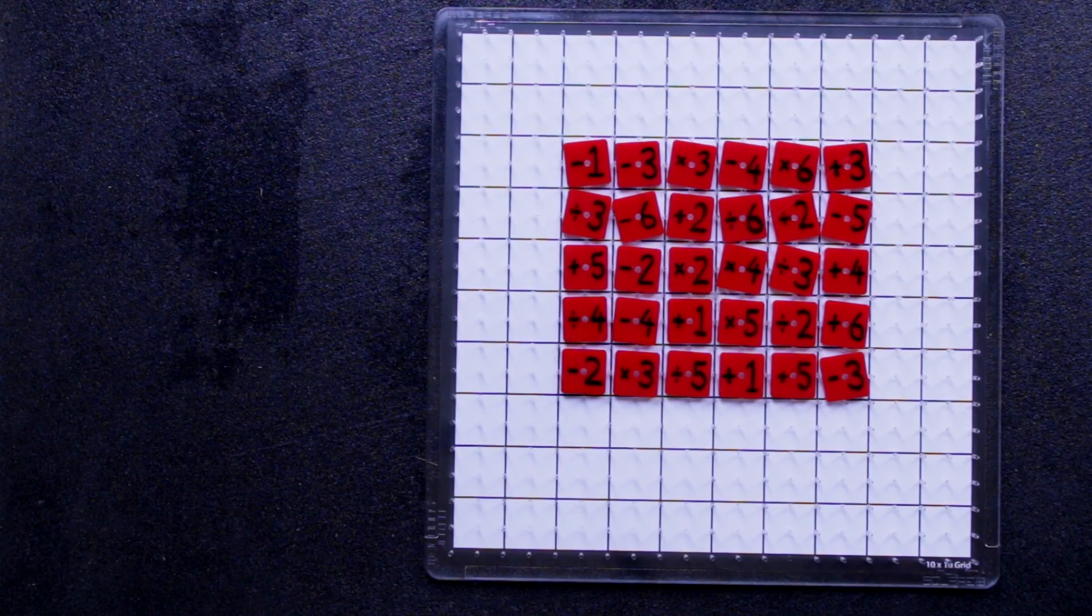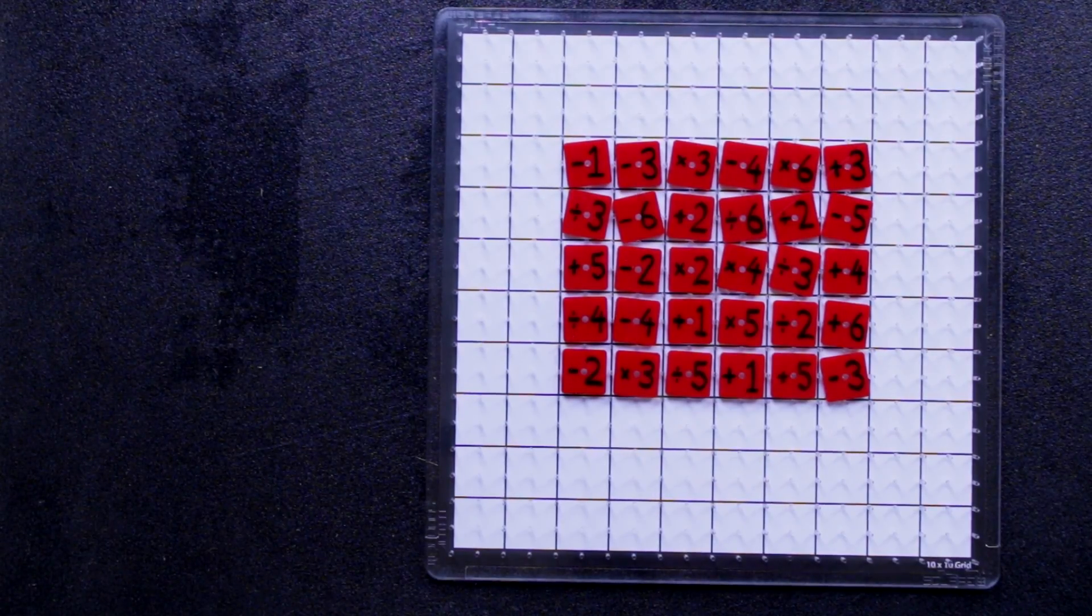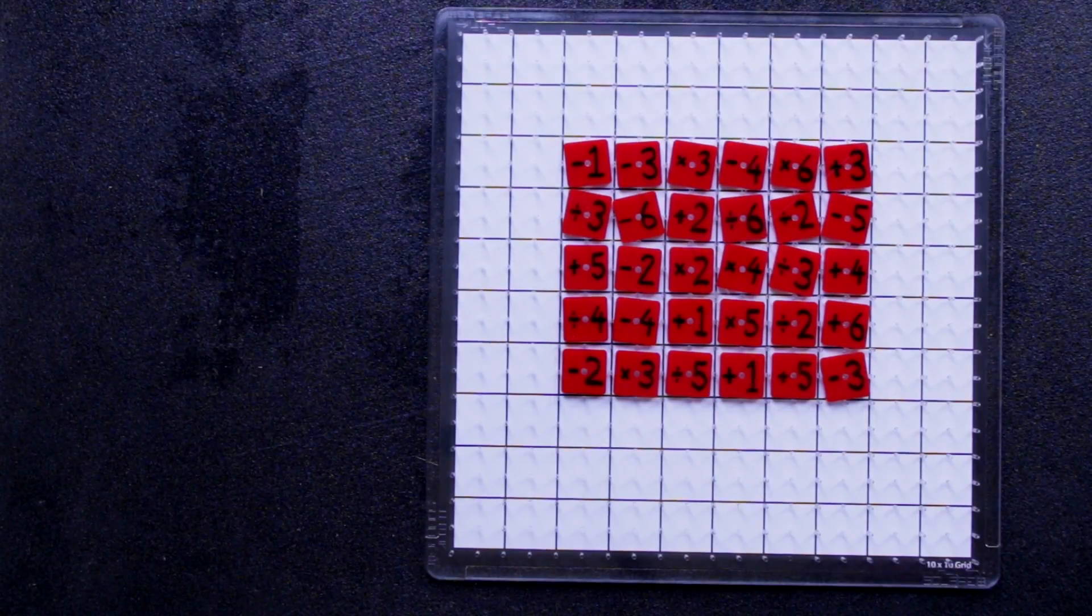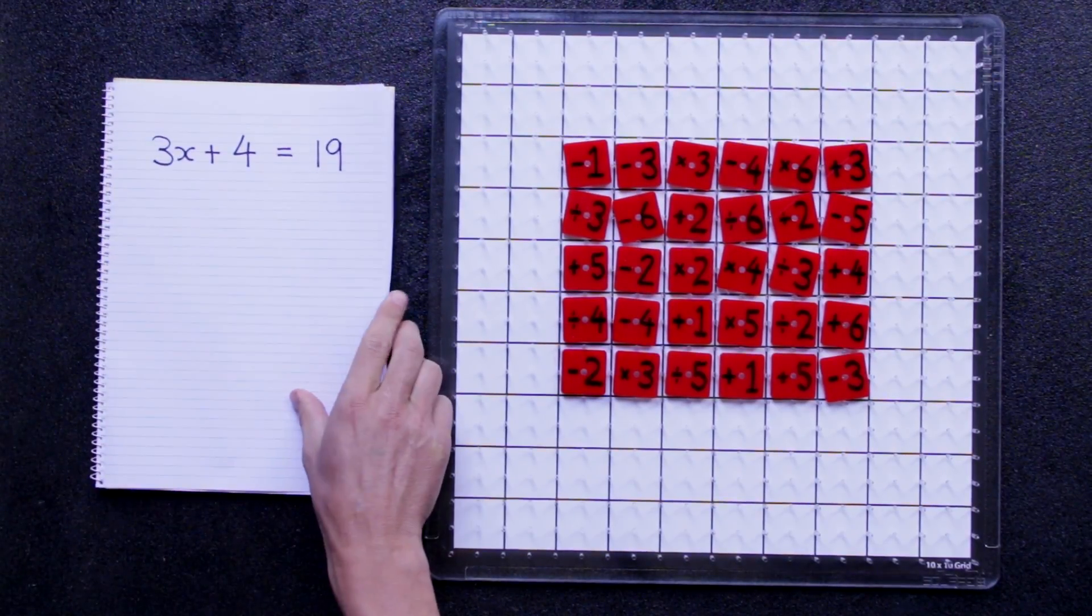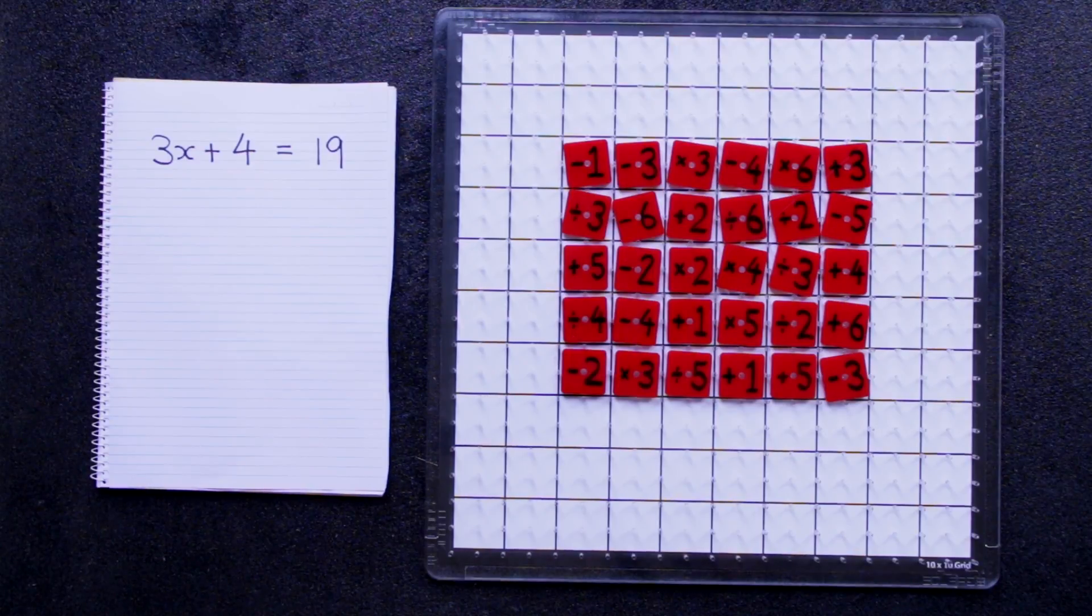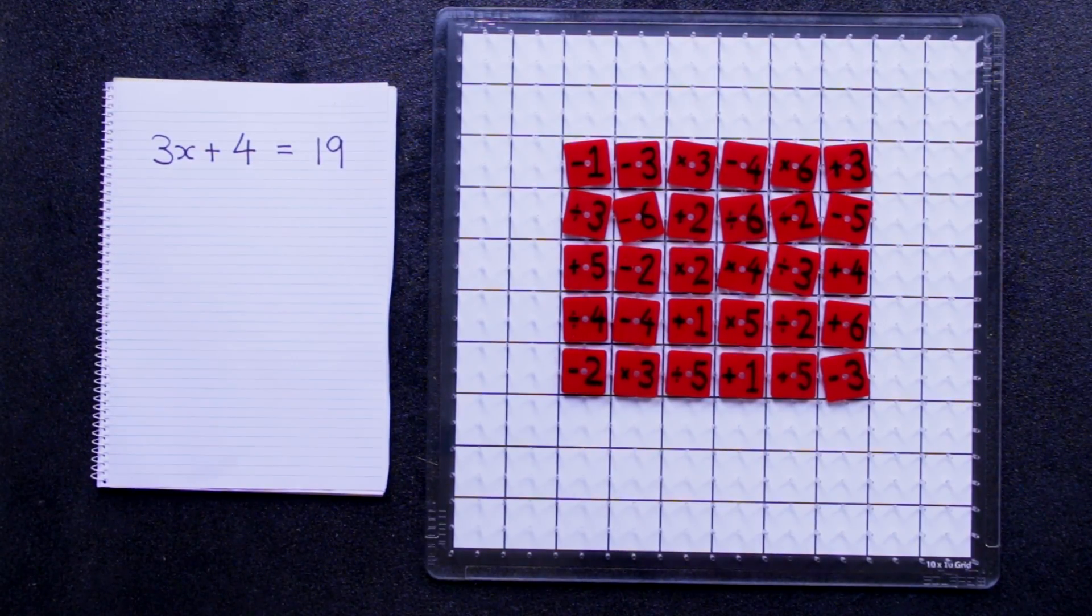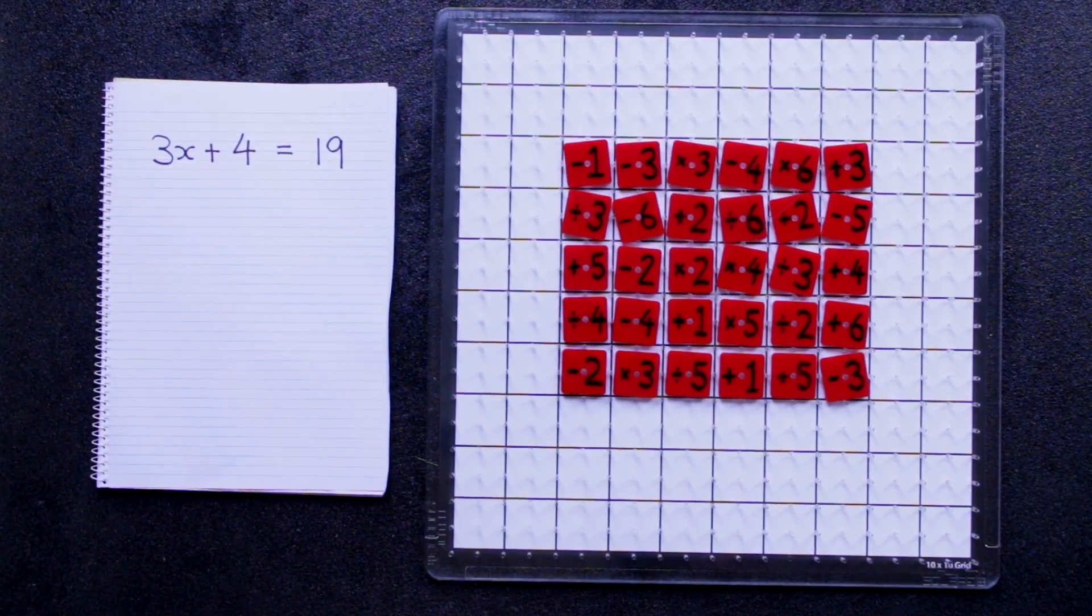A player begins by selecting a random algebra equation, either from the ThinkSquare website or from their teacher. This might be the equation. The aim is to solve that equation using the least amount of tiles possible by starting in a corner.